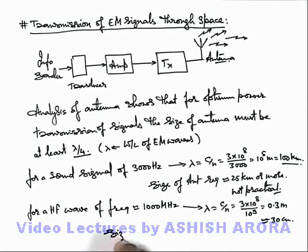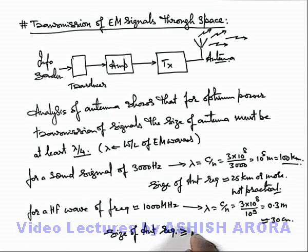So in this situation, the size of antenna required for transmission of such a high frequency wave would be more than or equal to λ/4, this is 7.5 centimeter, which is practically possible.